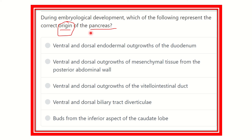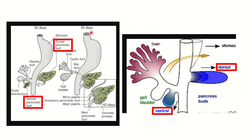To find where the pancreas originated, let's look at some pictures. In this first picture, we can see the terminal part of the esophagus, the stomach, and duodenum. There are two lip-like structures — one is the dorsal pancreatic bud and the other is the ventral pancreatic bud. After complete rotation, we can see these form the pancreas.